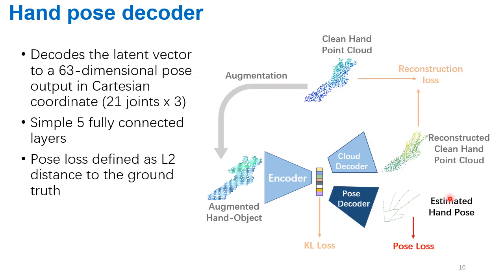To decode the hand pose in Cartesian coordinates, we simply use five fully-connected layers. The pose loss function is defined as the error distance between the estimated and ground truth pose. Notice that both the cloud decoder and pose decoder share a common latent vector, whereas the cloud decoder will help to make the latent space invariant to the input object. In this way, the pose estimation performance can be improved.